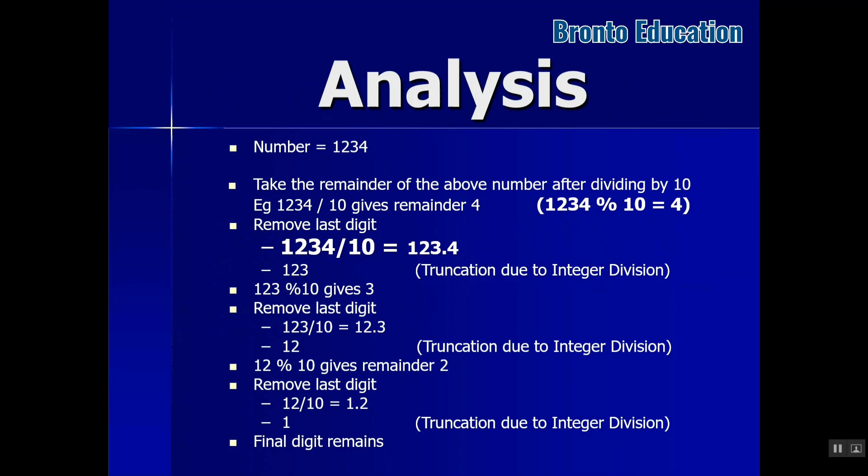First we are going to have a number, for example 1234. Take the remainder of the above number after dividing by 10, of course the remainder will be 4. Remove last digit - how? Just divide by 10, then it will be 123.4, which because this is an integer it will truncate and 123 will remain.